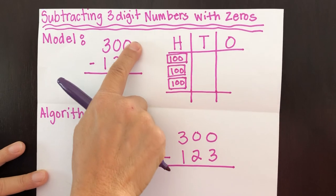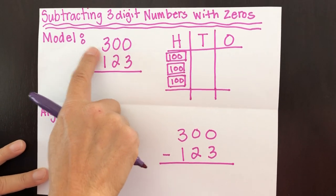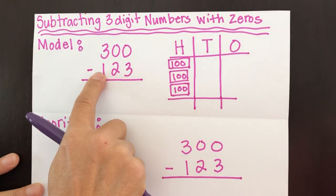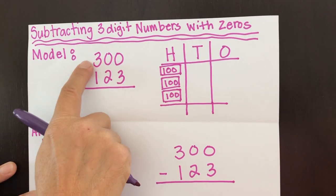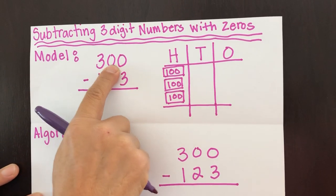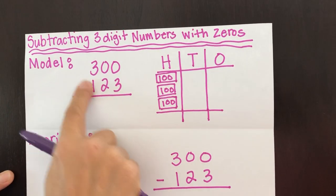So here's our example. This is a three-digit number. Both of them are three-digit numbers, but this one has zeros. So we're going to use our model method first.